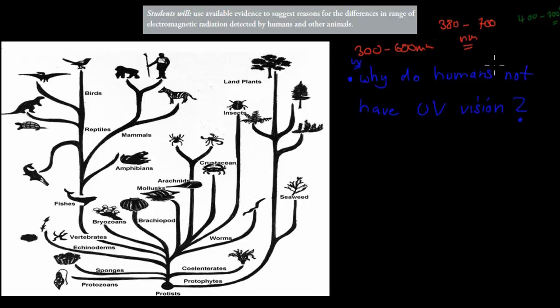So we have different animals having different spectrums that they can see. We humans can see only the visible light, which is about 380 to 700. The question is, what this dot point asks us is: students will use available evidence to suggest reasons for the difference in range of electromagnetic radiation detected by humans and other animals.